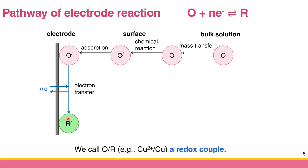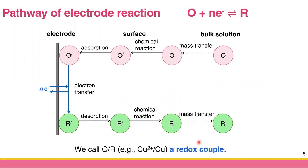After conversion from the oxidized to reduced form R, the species comes back to the bulk solution through a similar reverse process: it desorbs from the electrode, may undergo some chemical conversion to form R, and then undergoes mass transfer back to the bulk solution. There are many processes involved in converting the oxidized to reduced species at the electrode.